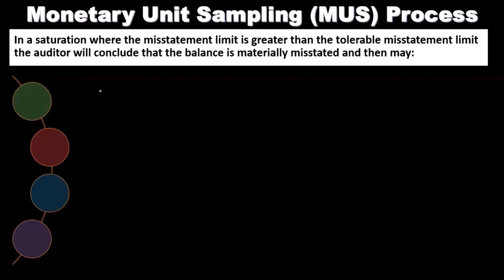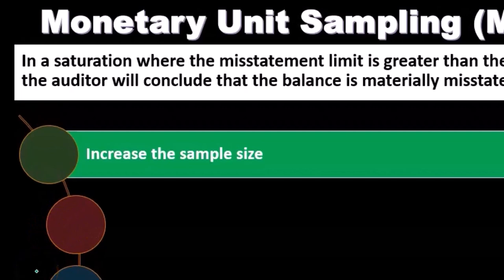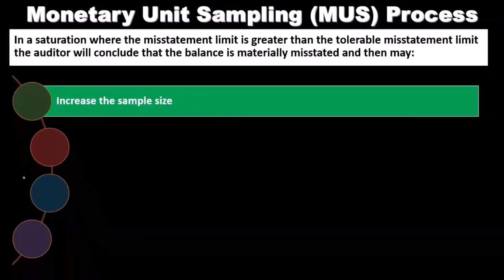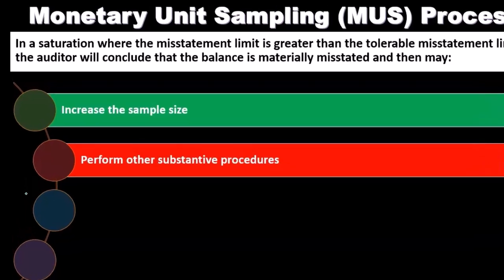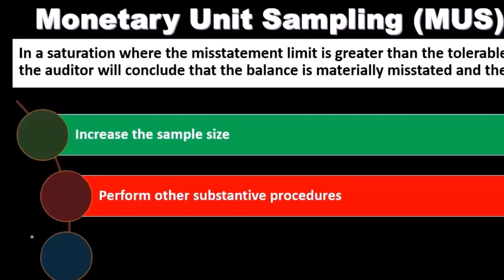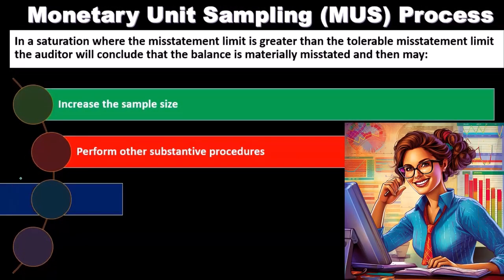That's a problem — it's materially misstated. What do we do from that point forward? We can increase the sample size, thinking maybe our sample is misrepresenting the population. We can do more testing to see if it is indeed materially misstated or if there's something wrong with the sample. We can also perform other substantive procedures — other types of procedures to test whether or not the balance is correct.